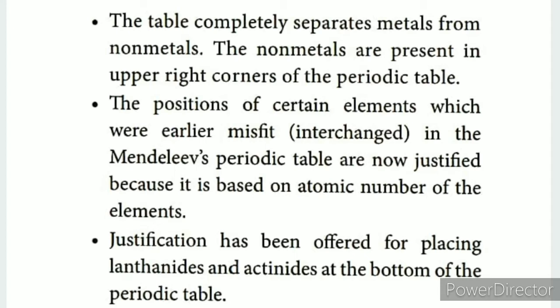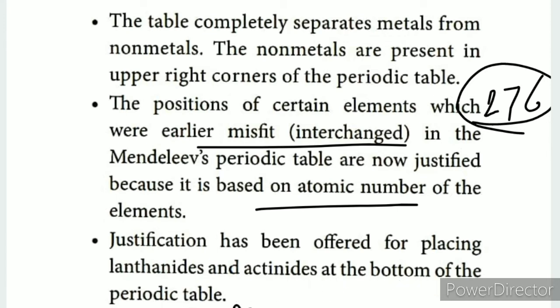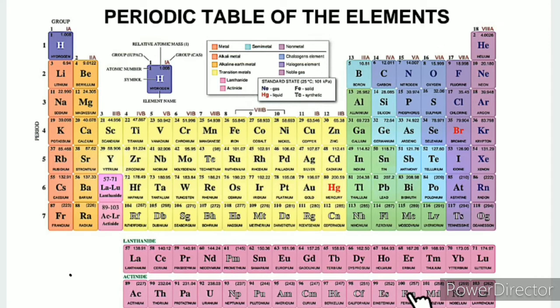The earlier elements that were misfit or interchanged in Mendeleev's periodic table are now justified because the table is based on atomic number. We arrange them in ascending order of atomic number, from small to large. Justification has been offered for placing lanthanides and actinides at the bottom of the periodic table.